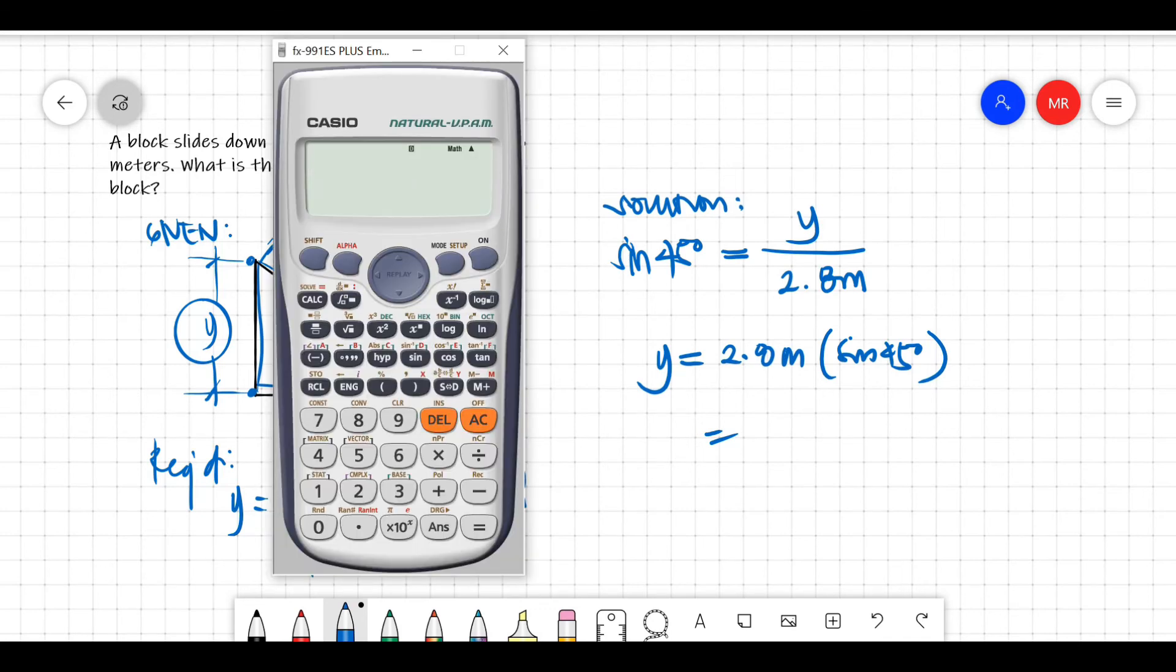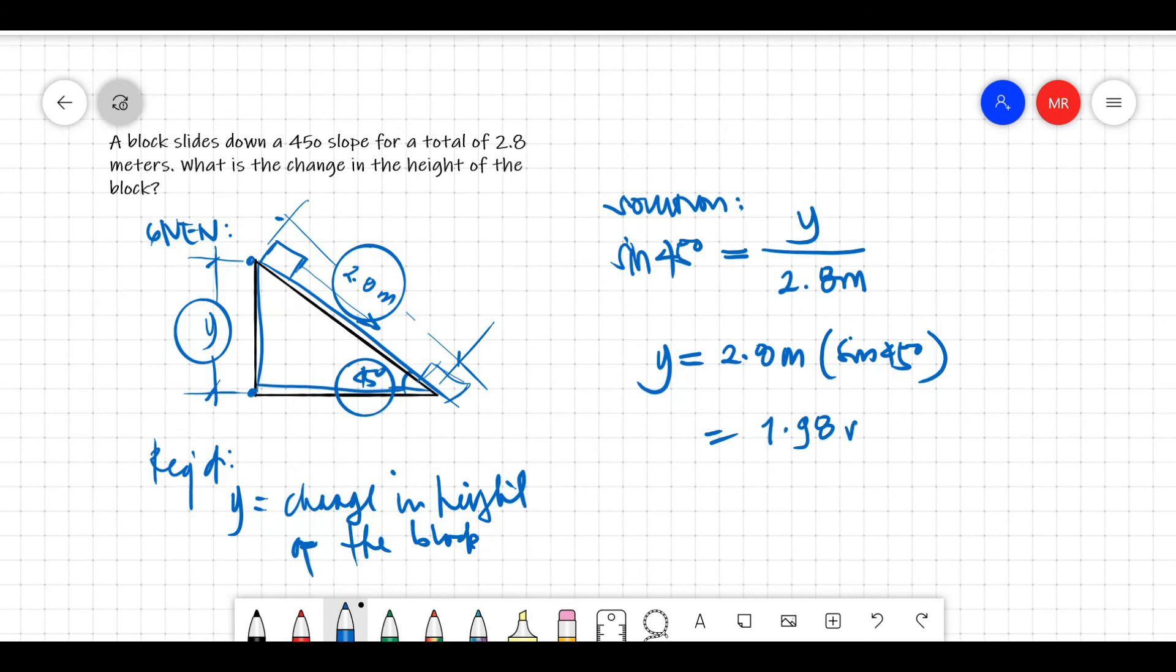So by computing, we'll have 2.8 meters times sine 45 is equal to 1.9798, or this is approximately 1.98 meters. So the answer is 1.98 meters.